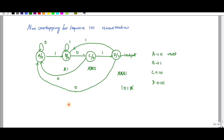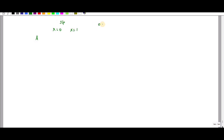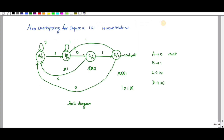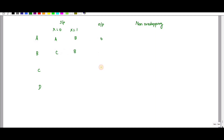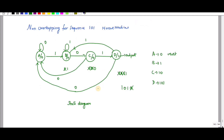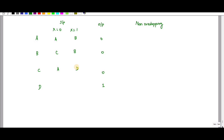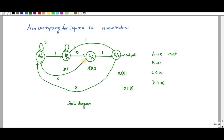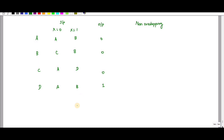Now let me draw the state table — this is the state diagram for non-overlapping Moore machine. The columns are: present state, input X=0, input X=1, and output. For output, X=1 is not required separately since output depends only on state. States A, B, C, D are listed. This is the state table for non-overlapping.